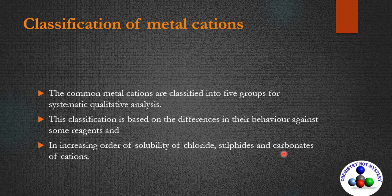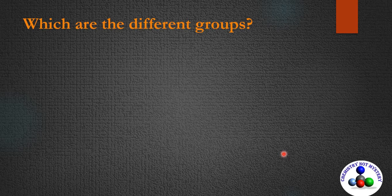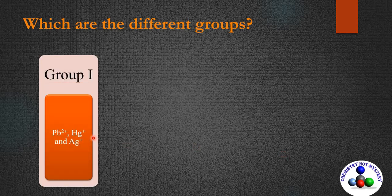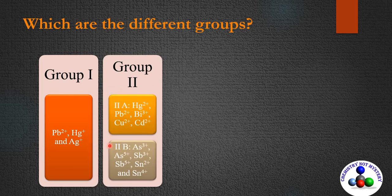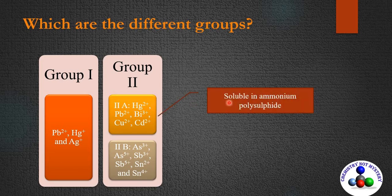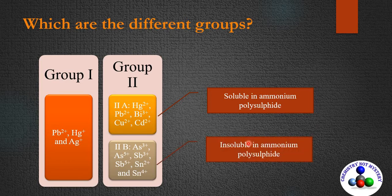Now let's see which cations belong to the different groups. In the first group, the following cations are included. The second group is further classified into Group 2A and Group 2B on the basis of their solubility in ammonium polysulfide. Cations of Group 2A are soluble in ammonium polysulfide, while cations of Group 2B are not.